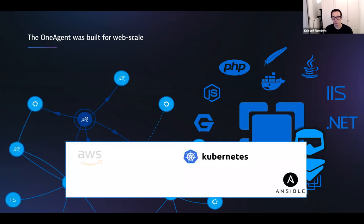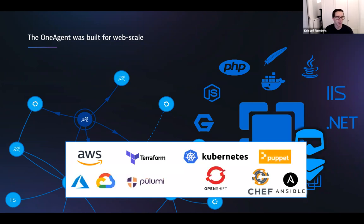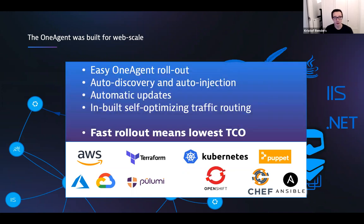We have support for Kubernetes via an operator and OpenShift. We have support for automation platforms such as Chef, Puppet, and Ansible, and we have support for cloud providers. There are many ways that you can deploy our OneAgent. Because we are able to deploy the OneAgent so quickly, it reduces the cost and the time it takes to get value out of our product. So that's the premise — it's easy to instrument and monitor your environments.